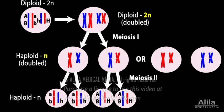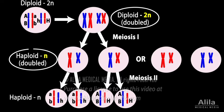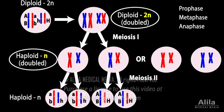Meiosis 1 is unique to germ cells — this is when the number of chromosomes is reduced. Meiosis 2 is similar to mitosis. Each of the divisions has four phases: prophase, metaphase, anaphase, and telophase.